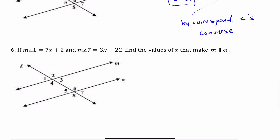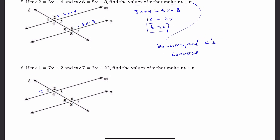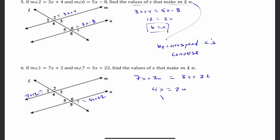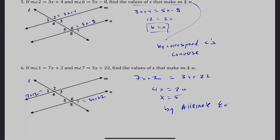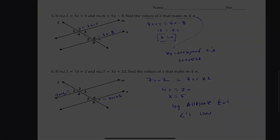Number 6: measure of angle 1 is 7X + 2 and measure of angle 7 is 3X + 22. These angles are on opposite sides of the transversal and on the outside — alternate exterior angles. So: 7X + 2 = 3X + 22. Subtracting 3X and 2 from both sides gives 4X = 20, so X = 5. M is parallel to N by the Alternate Exterior Angles Converse. See you later.